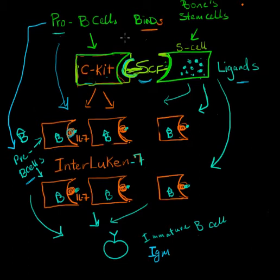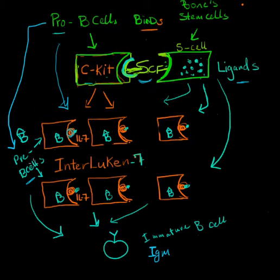Because they have this wonderful receptor called C-kit — I draw a big C here representing the C-kit receptor — it attaches to the stem cell factors in the stem cell. Now they communicate, and when they communicate it tells the pro B cells that they have to make millions of pre B cells.